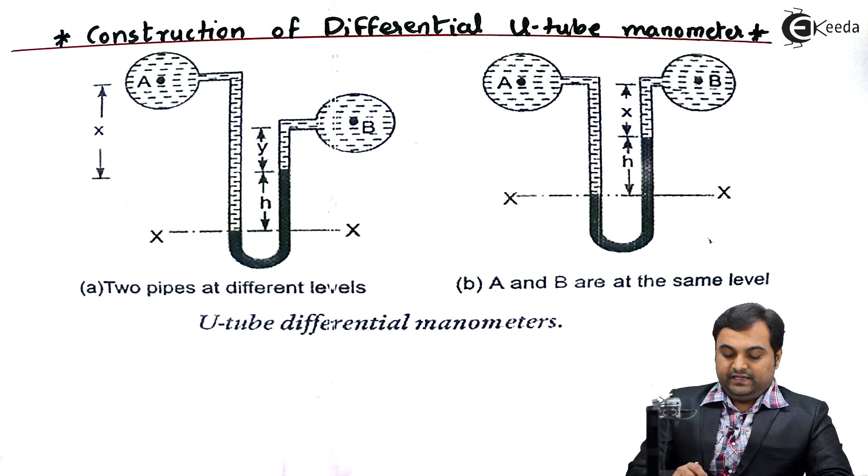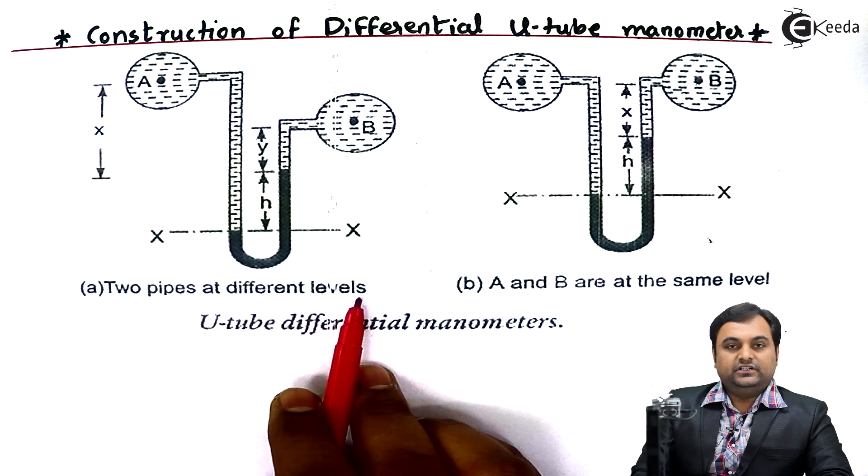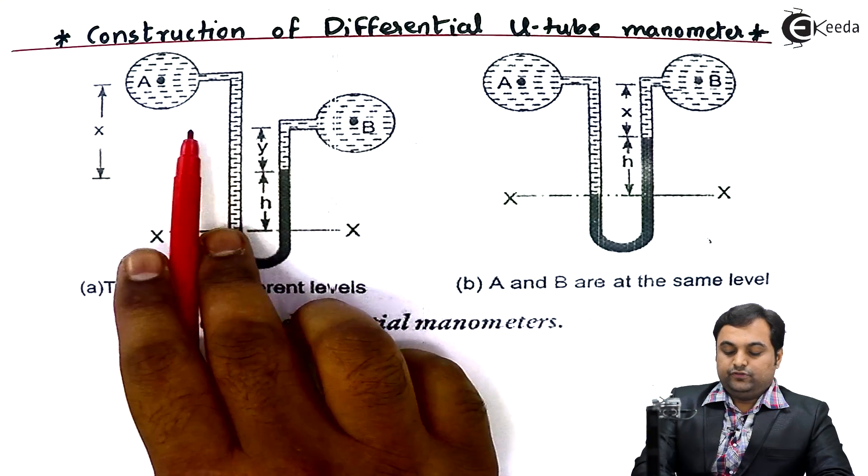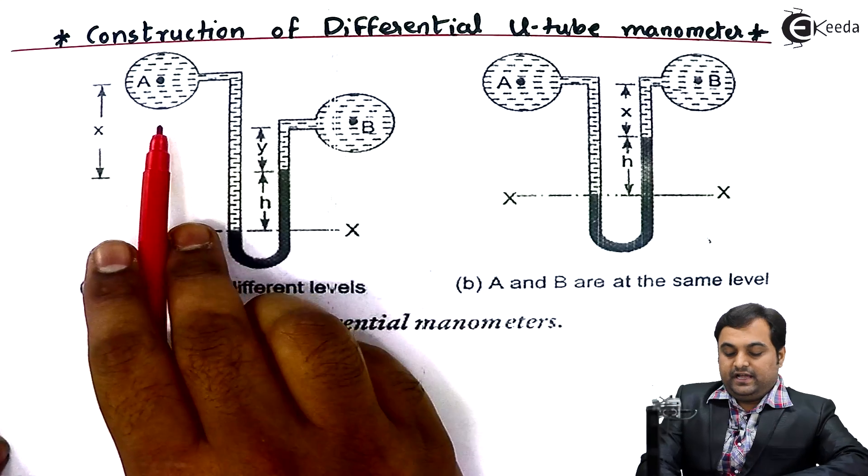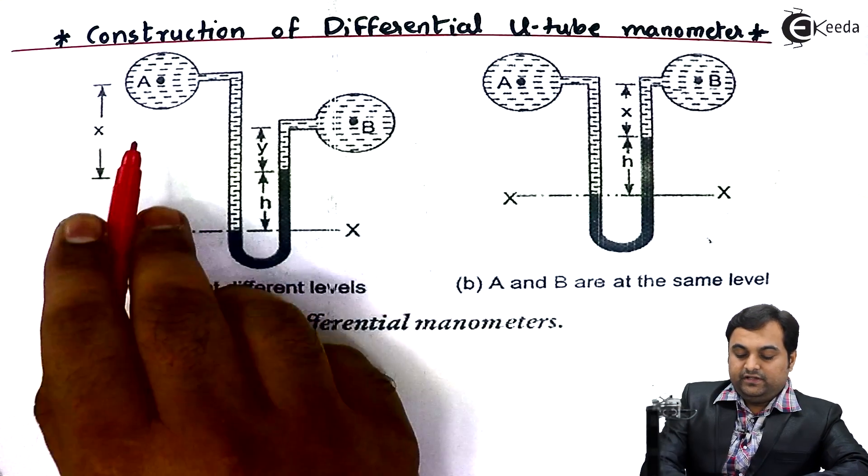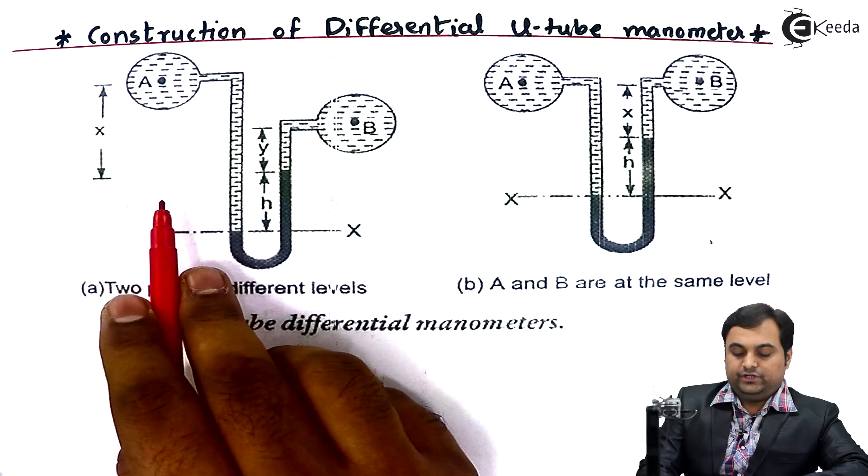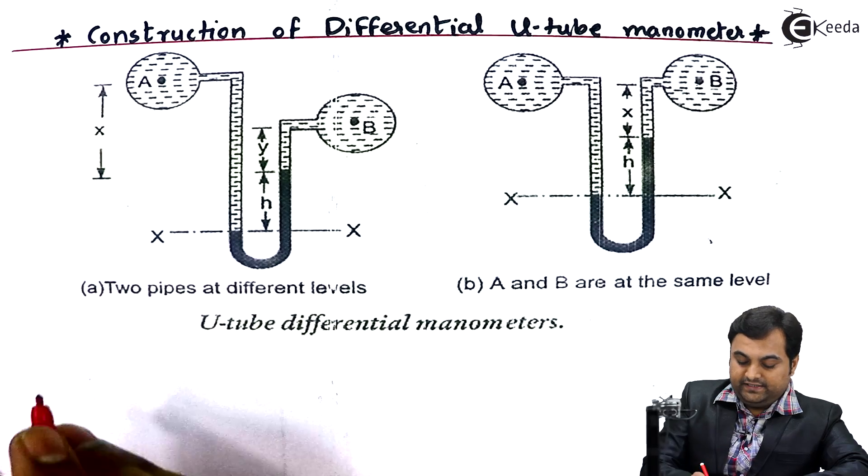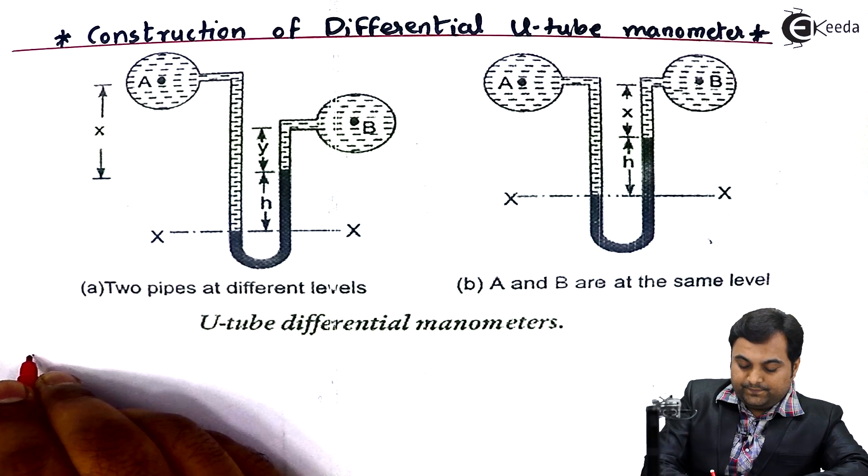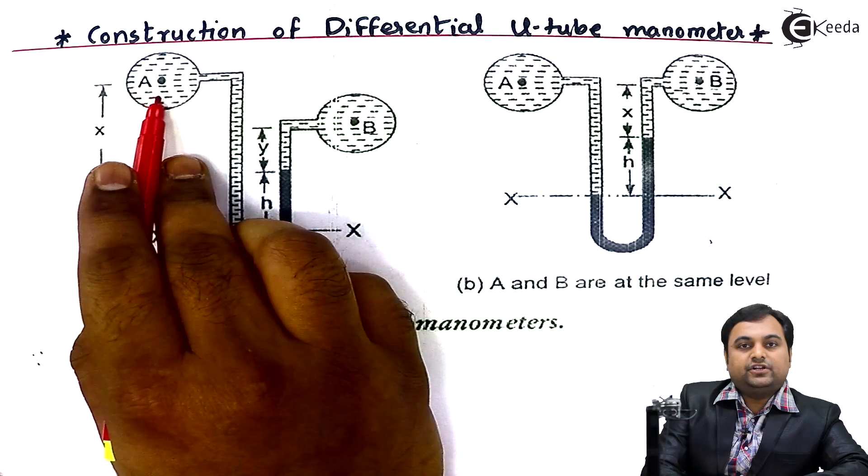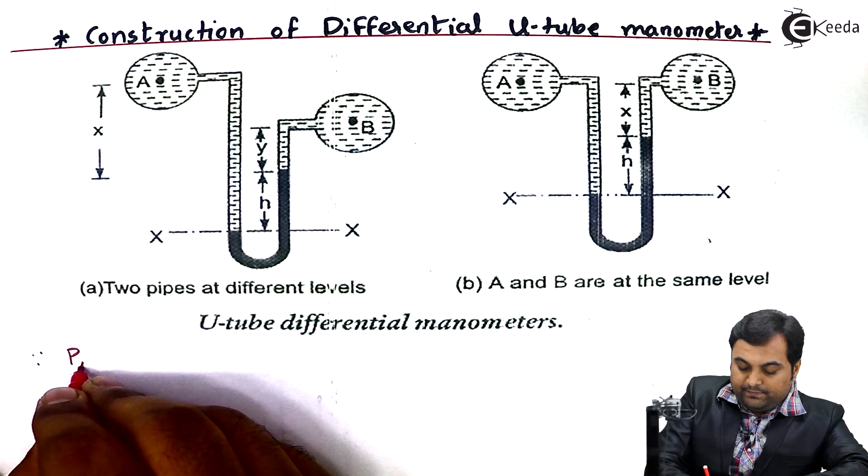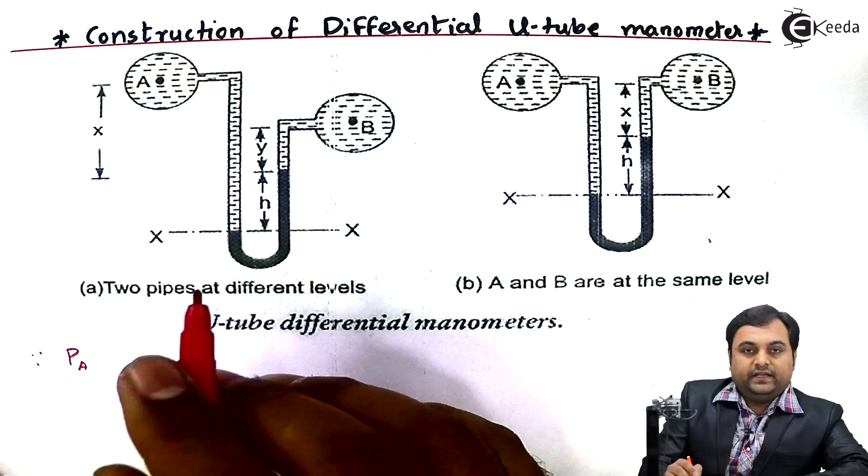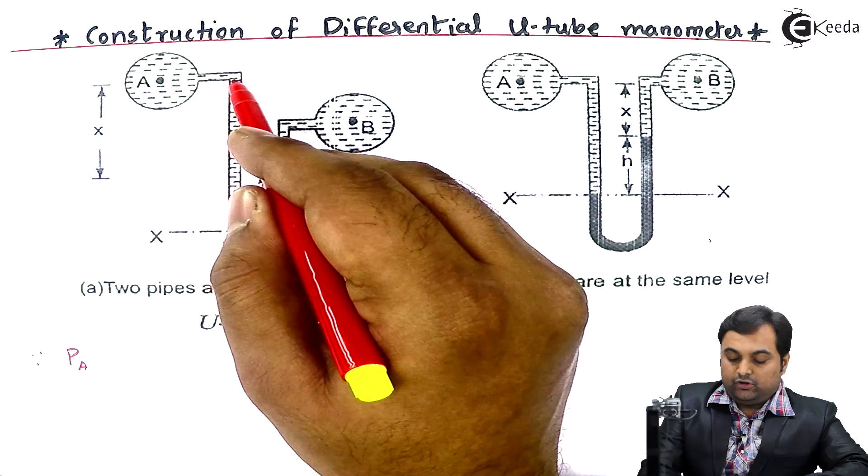The method is very simple. If we see two pipes at different levels, from that also we can calculate the pressure difference. The equation would be written such that first I'll write for the left portion.